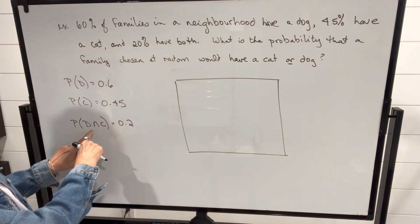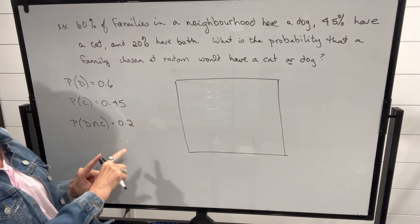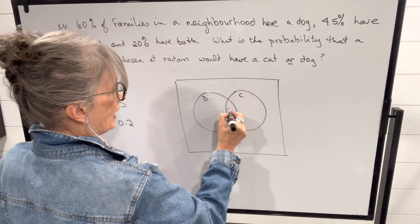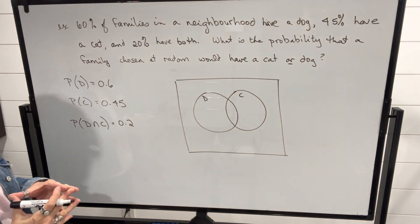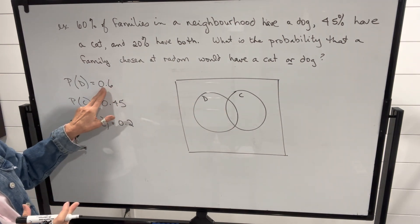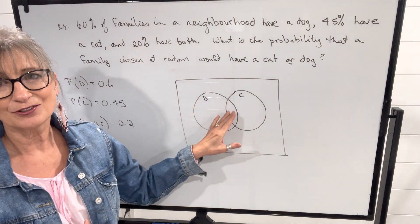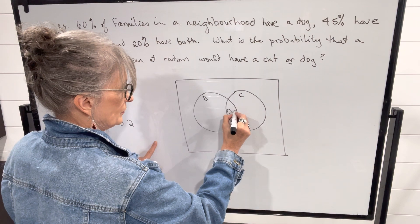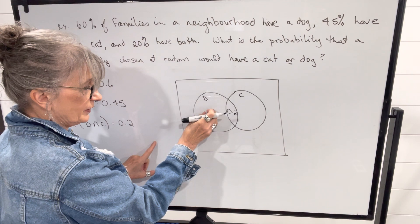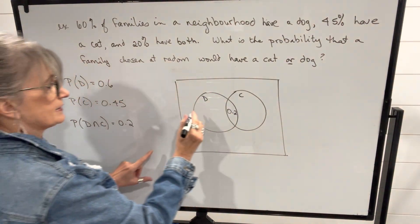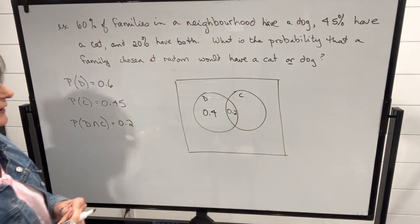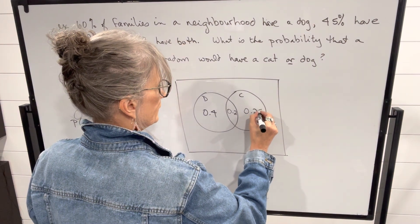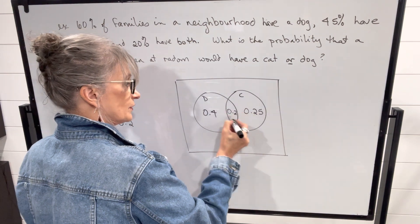These are not mutually exclusive because people can have both a cat and a dog. One circle represents dogs, and the other overlaps it because there's intersection between the two groups. When we fill in the values, we start with the intersection. We know the probability of having a dog is 0.6, but that includes those who have both. The probability of having a dog and a cat is 0.2, which goes in the intersection. So the probability of having a dog only is 0.6 minus 0.2, which is 0.4. Similarly, the probability of having a cat only is 0.45 minus 0.2, which is 0.25.